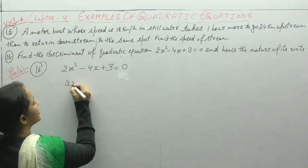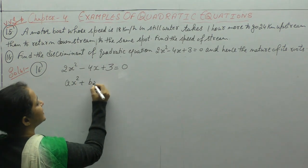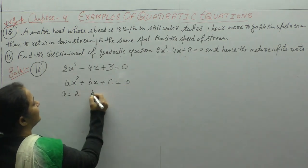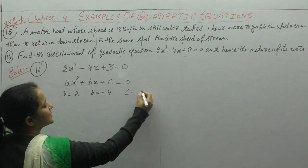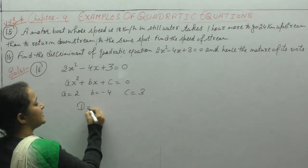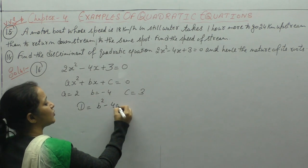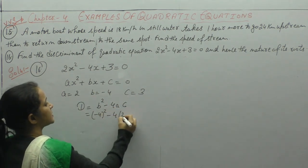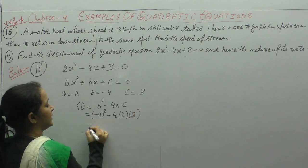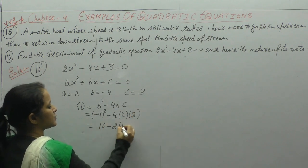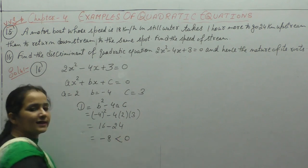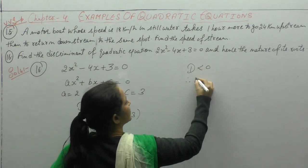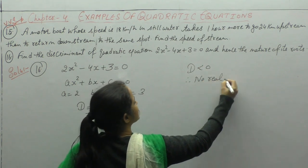Compare with the general equation Ax squared plus Bx plus C. Here A is 2, B is minus 4, and C is 3. Discriminant D equals B squared minus 4AC equals (minus 4) squared minus 4 times 2 times 3 equals 16 minus 24 equals minus 8. Since D is less than 0, no real roots exist.